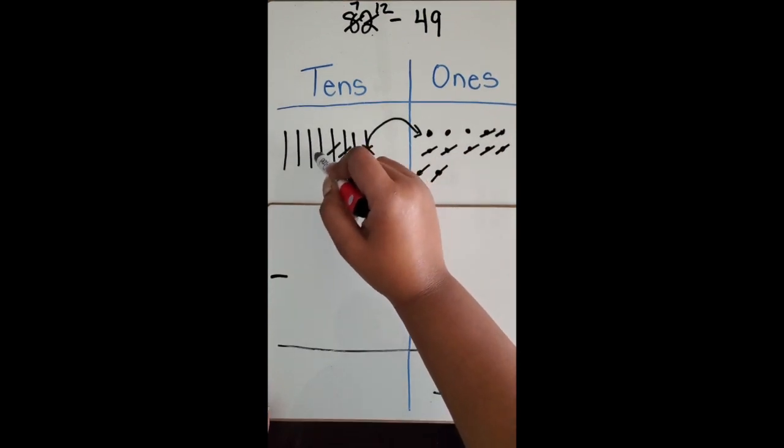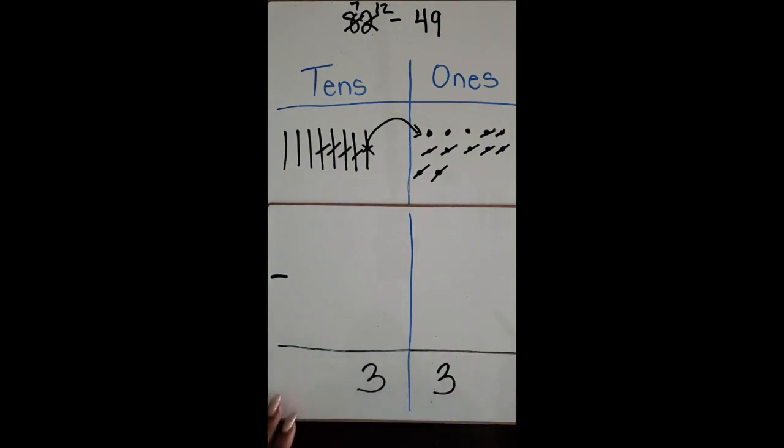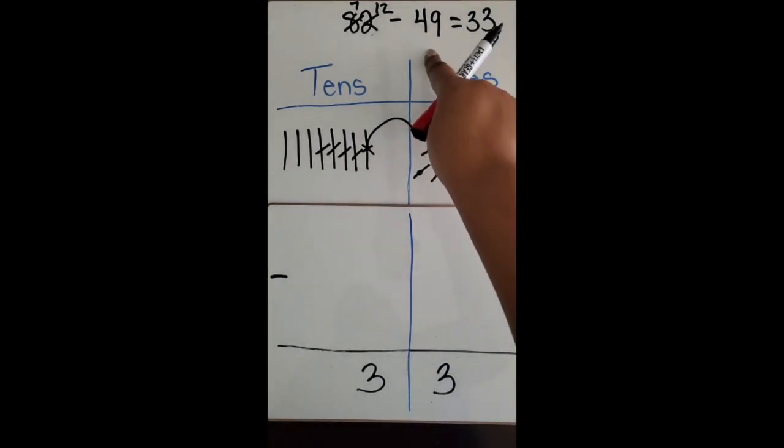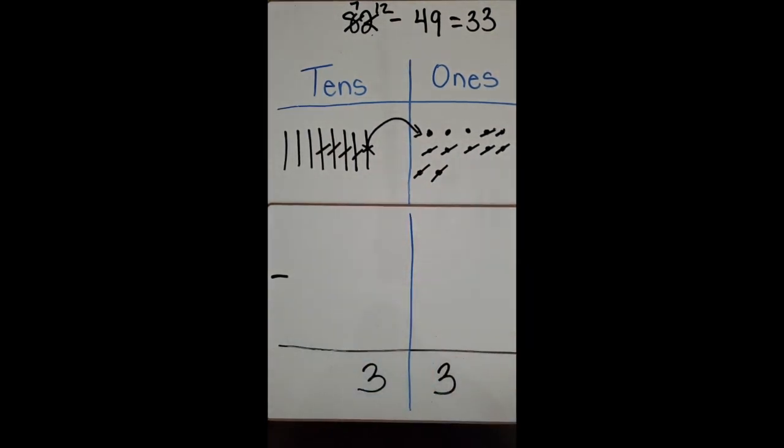So the difference between 82 and 49 is 33. So we subtracted a two-digit number from another two-digit number using a quick pic of base 10 blocks.